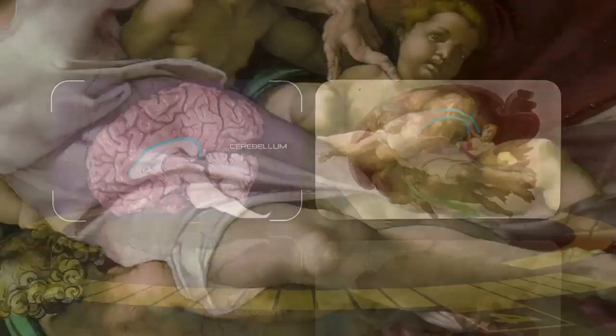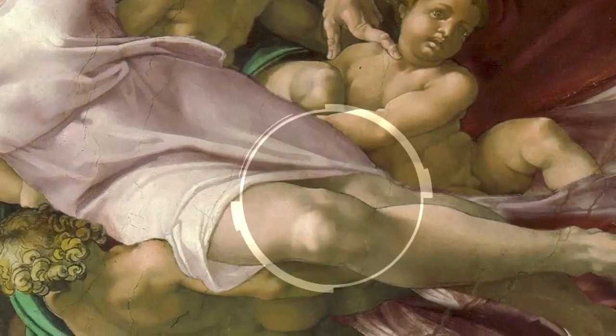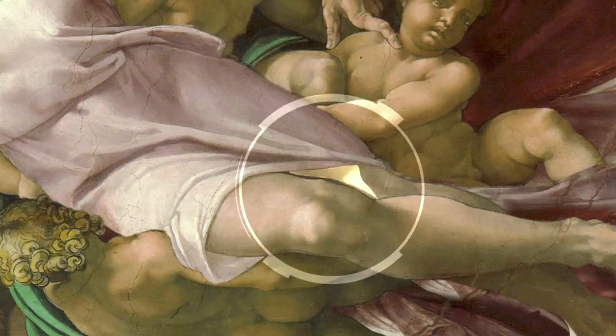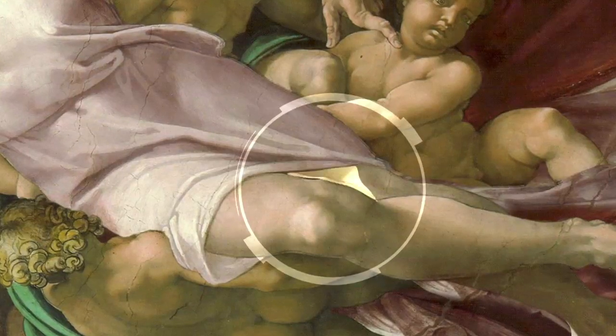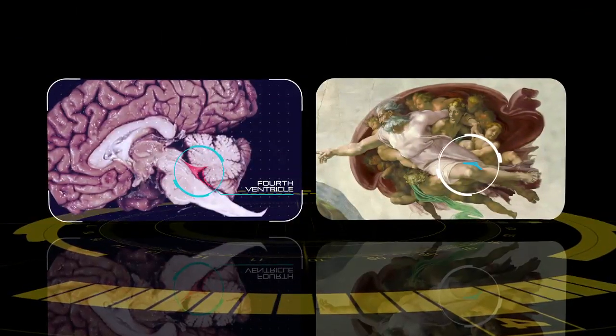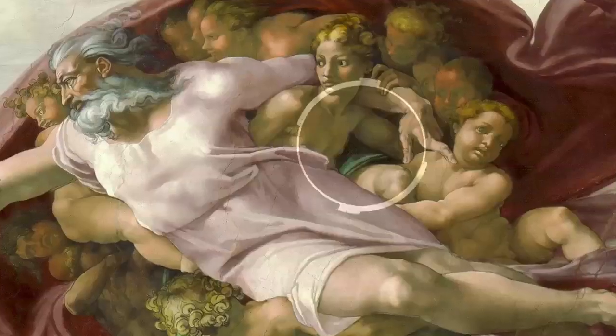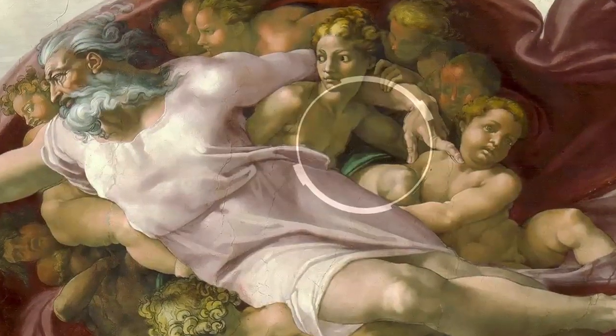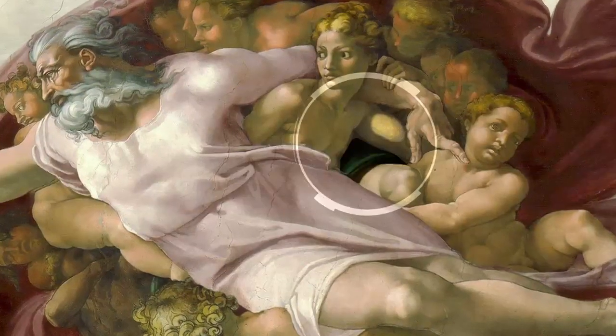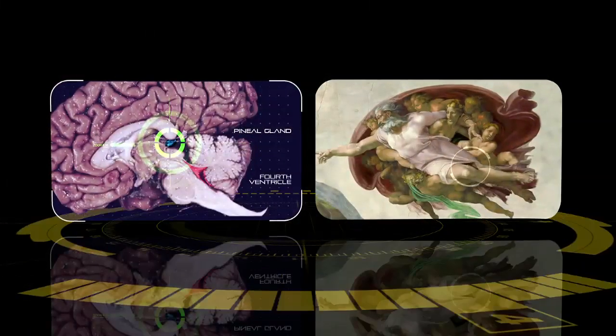Another indicator that the sun corresponds to the cerebellum is the placement of the fourth ventricle in the arrangement of God's legs. Notice the distinct triangular shape. Here, the quadrigeminal system is indicated. The pineal gland sits in this cavern, which is located above the fourth ventricle.